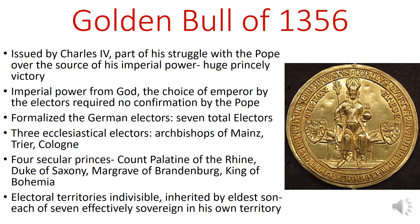Charles decreed that imperial power derived from God and that the choice of the emperor by the electors reflects the will of God and requires no confirmation by the Pope. So basically he's claiming to be a God-appointed emperor while owing nothing to the Pope. This effectively further formalized the German electors, setting them in stone for good. Now there are seven total electors in the empire. There are three ecclesiastical electors — the archbishops of Mainz, Trier, and Cologne — and it's pretty obvious why they're there: they can use their authority as priests and bishops to offset the fact that the Pope has been excluded from this process.